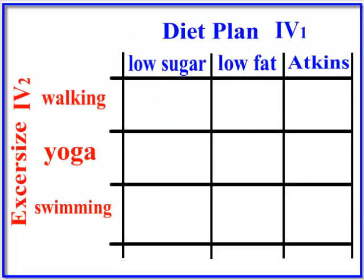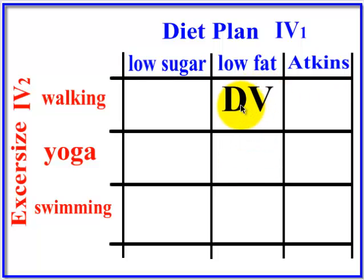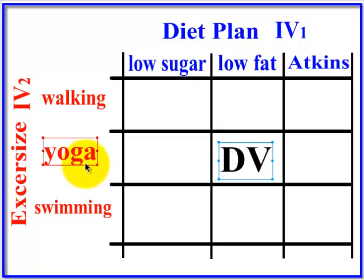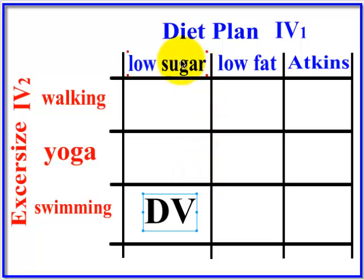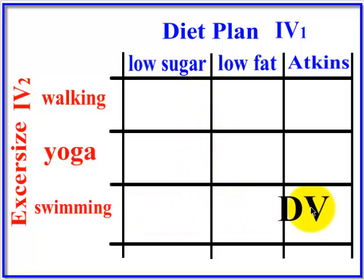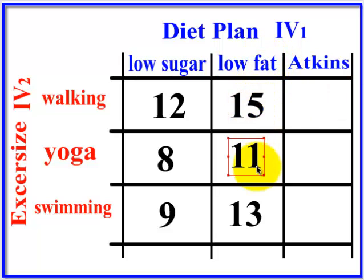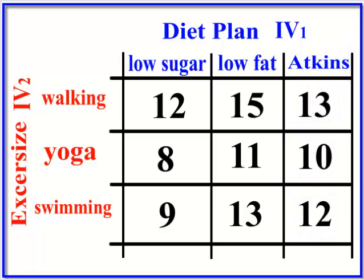Now we're going to pretend we have data. The top of the table shows IV1 for diet plan, and the different exercises go along the other axis. The DV values go in the cells — for example, the number in the low fat / yoga cell would be the average weight loss for everyone who was on the low fat diet and doing yoga. Similarly, a cell would show the mean weight loss for everyone on the low sugar diet who does swimming, and so on.